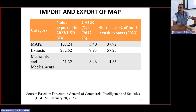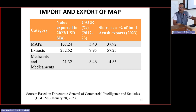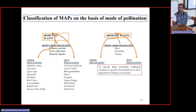As far as import and export of MAPs is concerned, MAPs alone have a value of near about 167.24 billion US dollars, with a compound annual growth rate of 5.40%. As a share of total Ayush exports: MAPs contribute 37.92%, extracts contribute near about 57.25%, and medicaments contribute near about 4.83% of total Ayush exports.